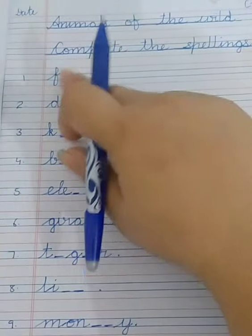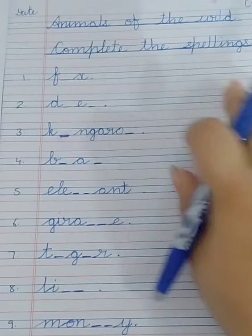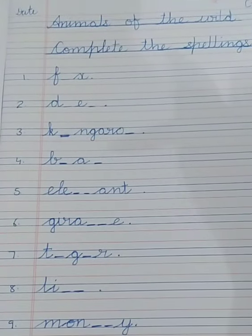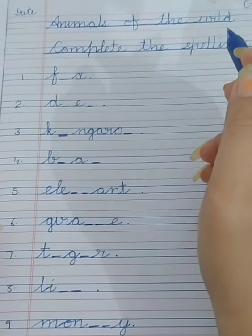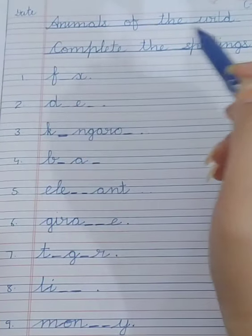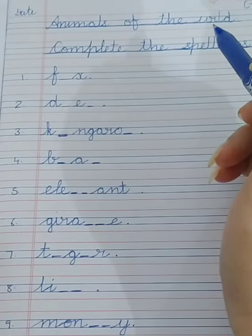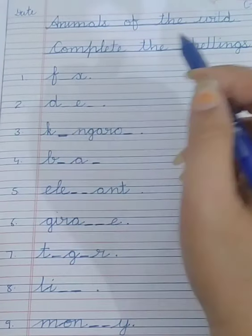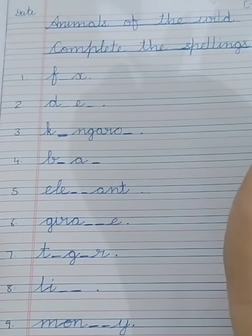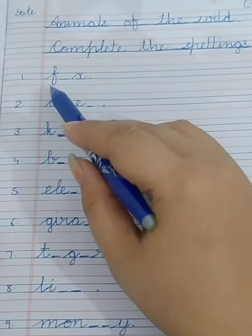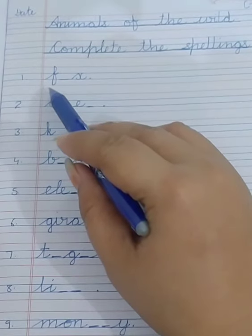So let's start. In this I have made blanks, and this is an incomplete spelling. Earlier it was incorrect, now today we are going to complete the spelling. The spelling is incomplete, we are going to write the word and complete it.